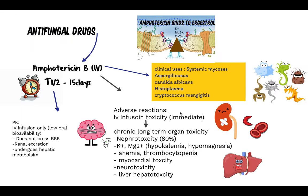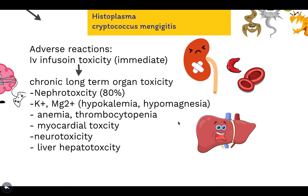The adverse reactions caused by Amphotericin B usually outweigh the benefits, so it has far more adverse reactions than benefits. The adverse reactions upon IV infusion — immediate effects — include fever, vomiting, headache, hypertension, muscle spasm, and phlebitis. These are all tolerable conditions seen with other drugs as well.